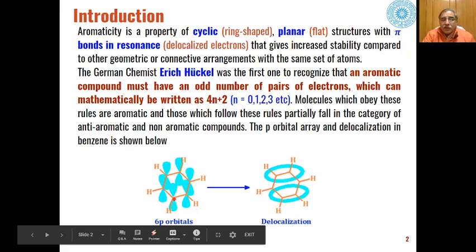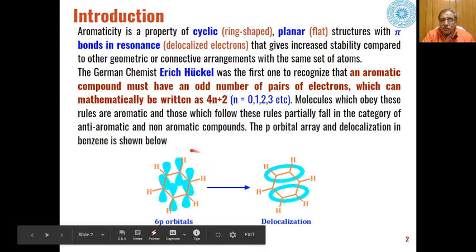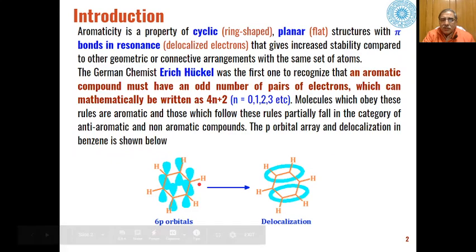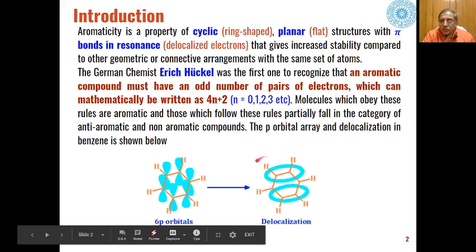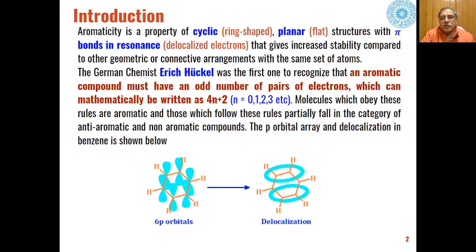For example, in case of benzene, there are 6 pi electrons. If n is taken as 1, the total comes out to be 6. Because of the presence of these 6 pi electrons, benzene is an example of an aromatic compound, and the pi electron cloud is delocalized over the whole molecule.